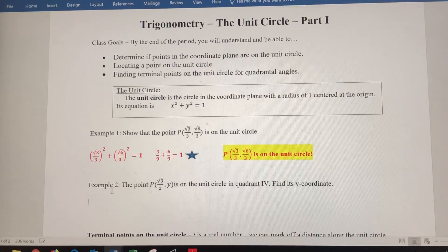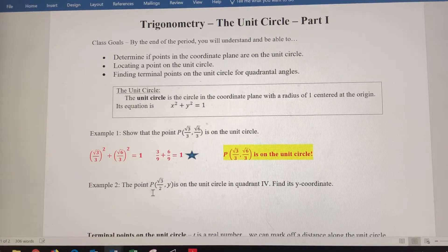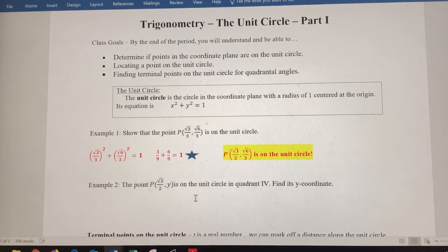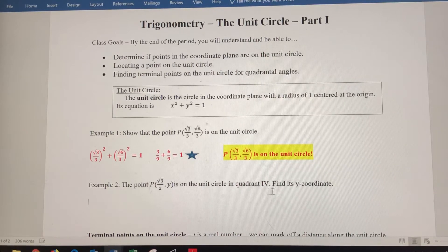All right, so in example 2 here we've got the point radical 3 over 2 for the x-coordinate. Why? We don't know. That's what we're going to try to find. We know this point is on the unit circle, and we know this point is in quadrant 4.